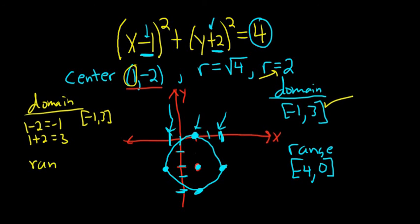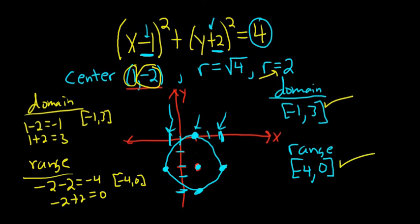To check the range, you take the y coordinate of the center, and you add and subtract the radius. So negative 2 minus 2 is negative 4. And then negative 2 plus 2 is 0. So the range should be negative 4 to 0. And it is. Check. Just an optional way to check the domain and range. I hope that made sense.